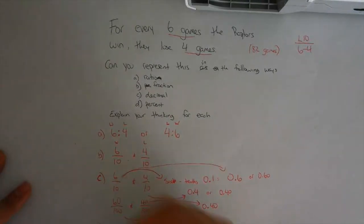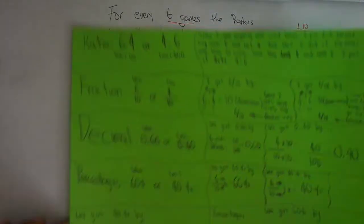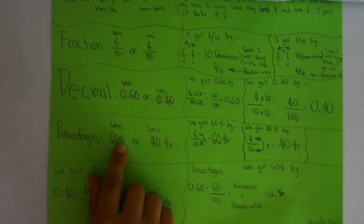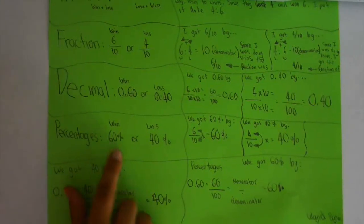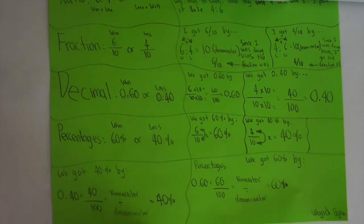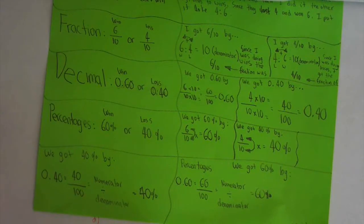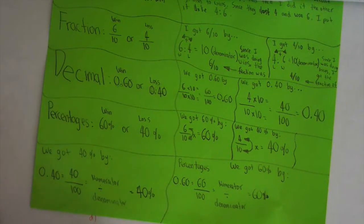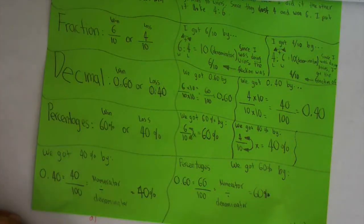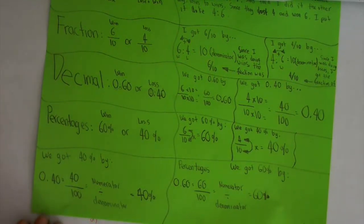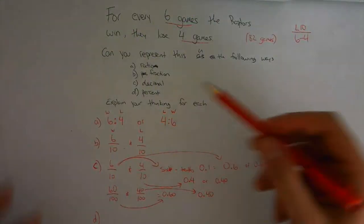Now let's go to percentage. What we did for percentage was we got sixty percent and forty percent—sixty percent for wins and forty percent for loss. How we did that was, for fractions, since it was six over ten, we did six divided by ten equals zero point six, and we know zero point six equals sixty percent. We did the same for forty percent: four over ten, four divided by ten equals zero point four, which equals forty percent.